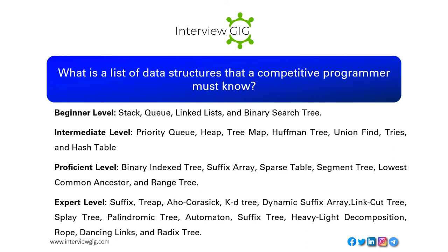What data structures must a competitive programmer know? Beginner level: stack, queue, linked lists, and binary search tree. Intermediate level: priority queue, heap, tree map, Huffman tree, union find, tries, and hash table. Proficient level: binary index tree, suffix array, sparse table, segment tree, lowest common ancestor, and range tree. Expert level: suffix tree, Aho-Corasick, KD tree, dynamic suffix array, link-cut tree, splay tree, palindromic tree, automaton.